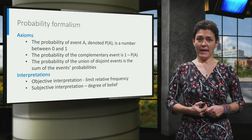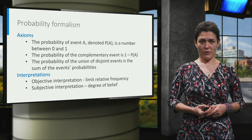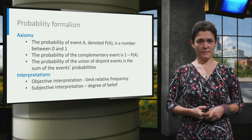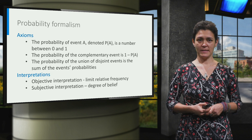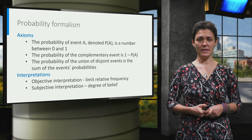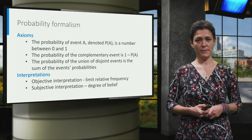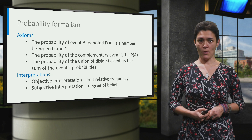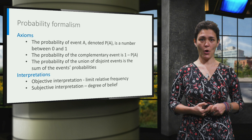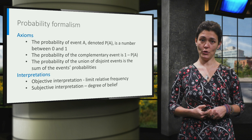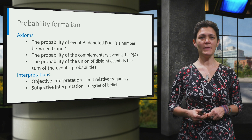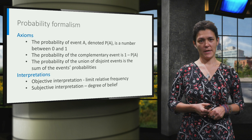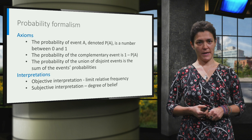An event A — for example, it will rain tomorrow — may or may not occur. The probability of this event's occurrence is denoted by P(A) and it is a number between 0 and 1. The complement of event A, it will not rain tomorrow, will then happen with probability 1 minus P(A).